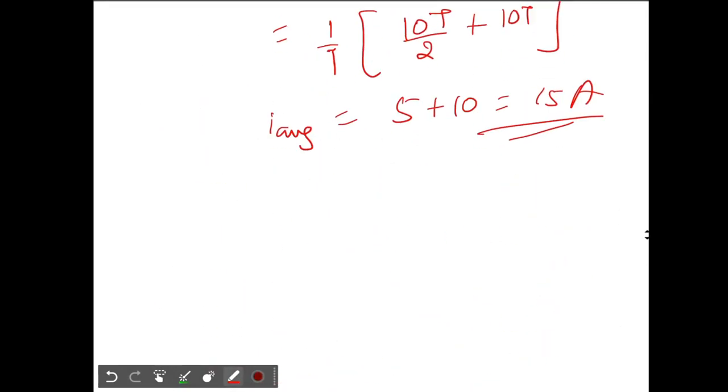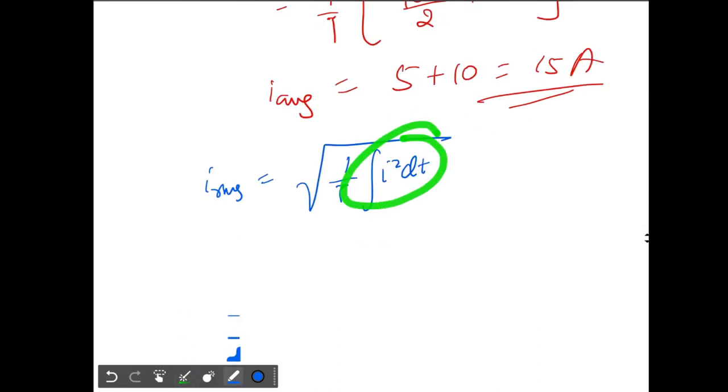But how to calculate the RMS value? That's also very easy. So i RMS will be root of 1 by T, integration i squared dt. So first of all, let's do this. Integration i squared dt will be integration of (10t by capital T plus 10) whole square dt.